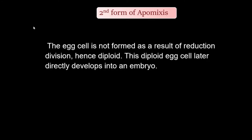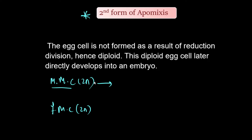Now let us discuss the second form of apomixis. The key point here is that the egg cell is not formed by reductional division. As we know, the female mother cell, which is diploid, normally undergoes meiosis to form female gametes.